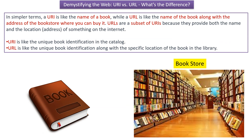In simple terms, URI is like the name of the book, while URL is like the name of the book along with the address of the bookstore where you can buy the book. URLs are a subset of URIs because they provide both the name and the location of something on the internet. URI is like a unique book identification in the catalog, while URL is like a unique book identification along with the specific location of the book in the library.